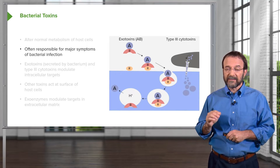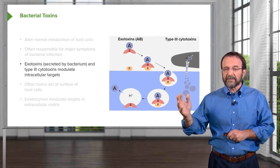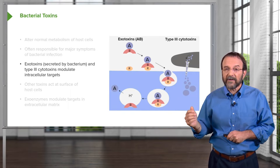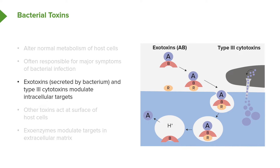We recognize different classes of bacterial toxins. Some are called exotoxins because they are secreted by the bacterium into the extracellular environment. These exotoxins have a typical AB structure, with separate subunits consisting of an A component and a B component. Typically, they are secreted by the bacterium, bind a receptor on the surface of the eukaryotic cell, and are taken up into the cell by the endocytic pathway. The A component, which is the active component, is released from the receptor-binding component and makes its way into the cytoplasm, where it then has its effect on cells.